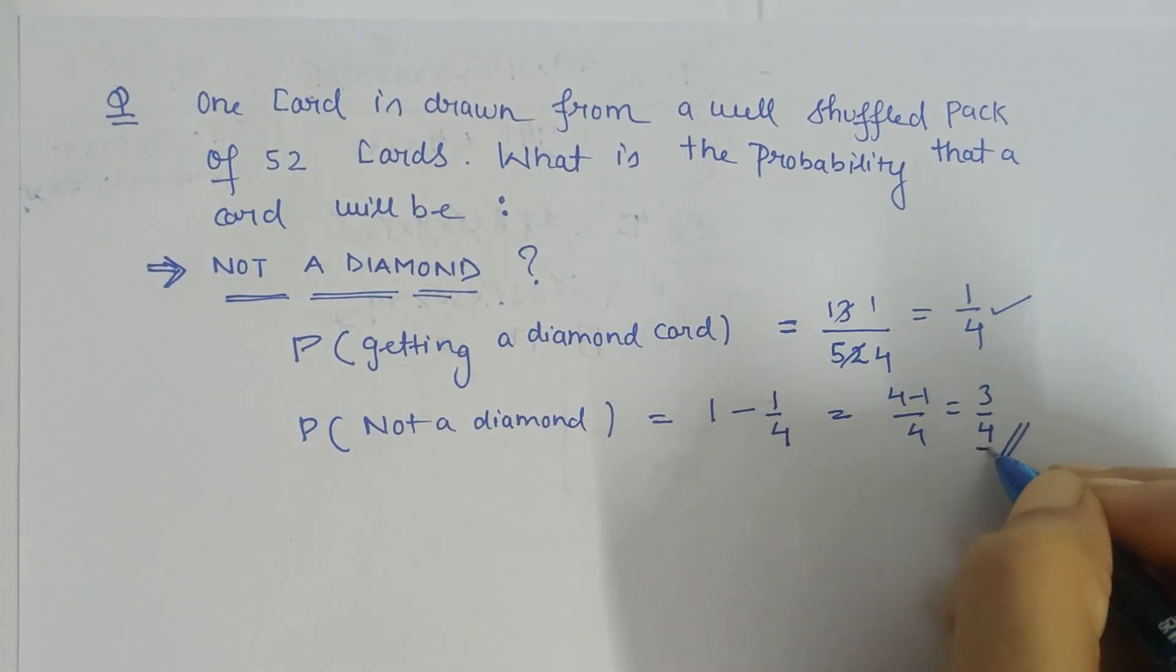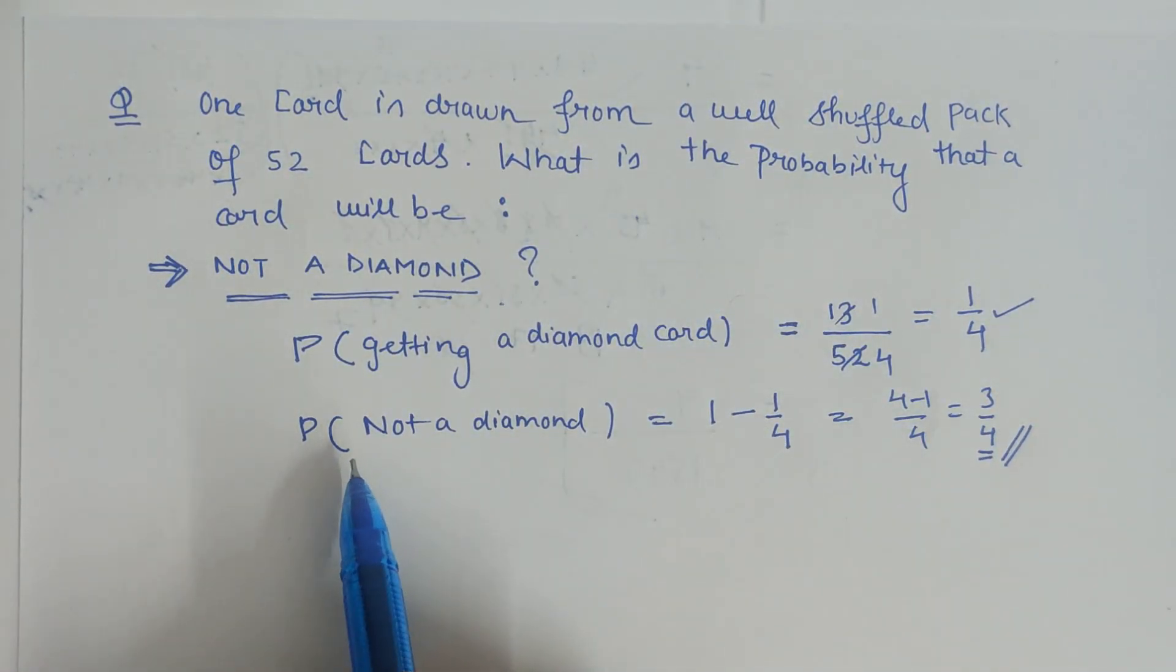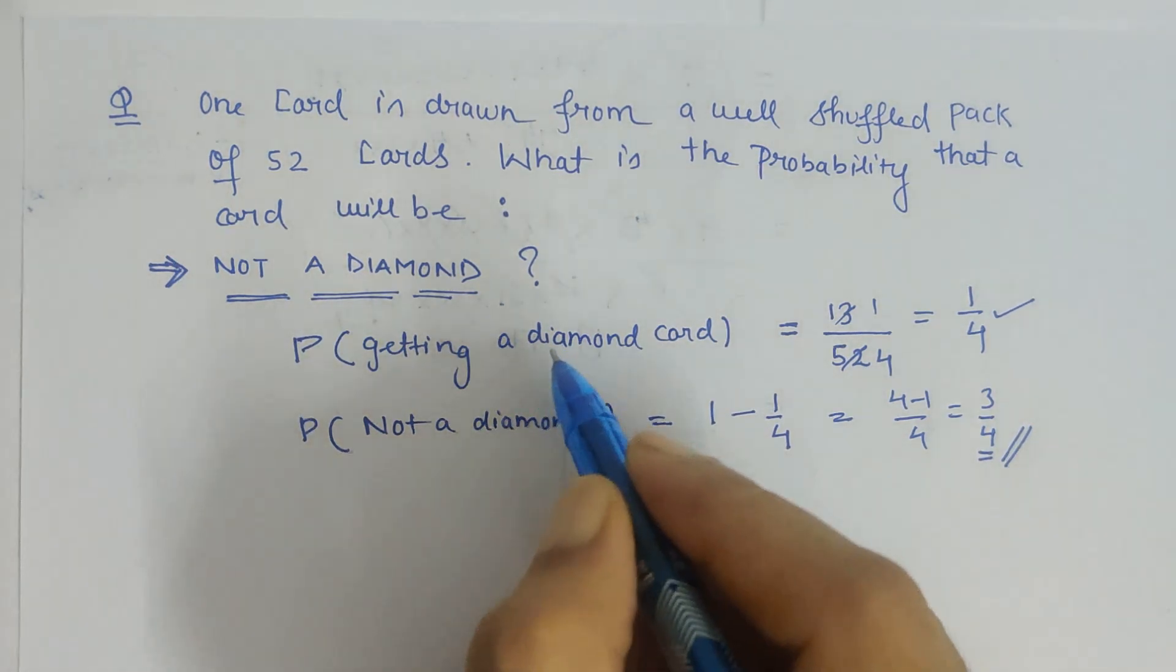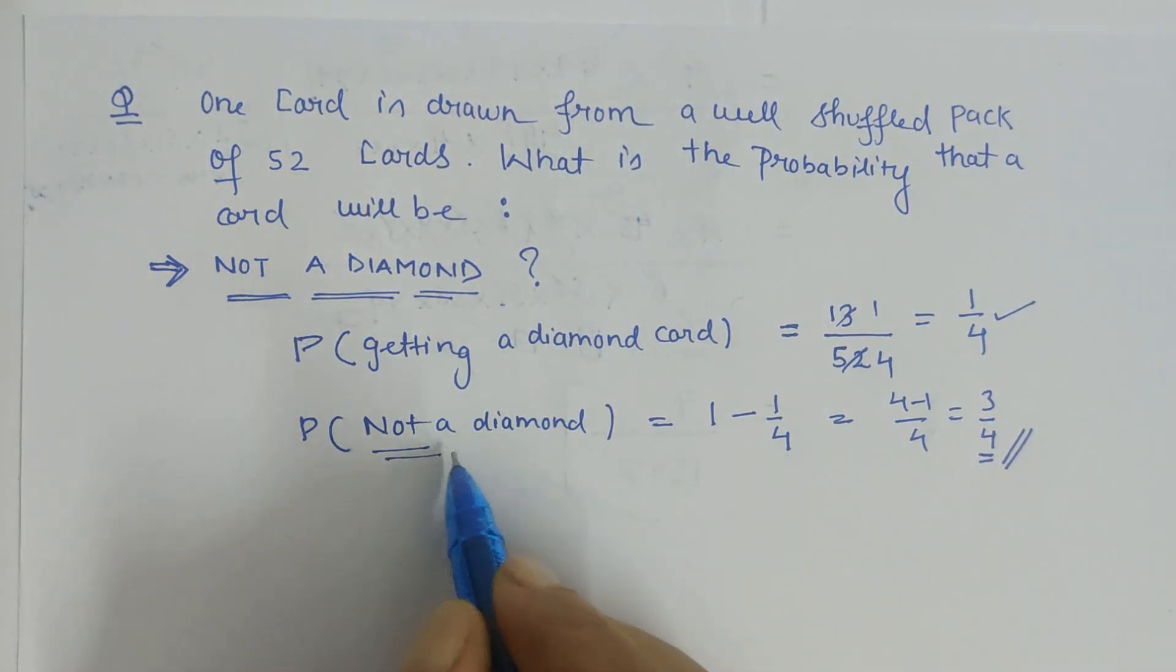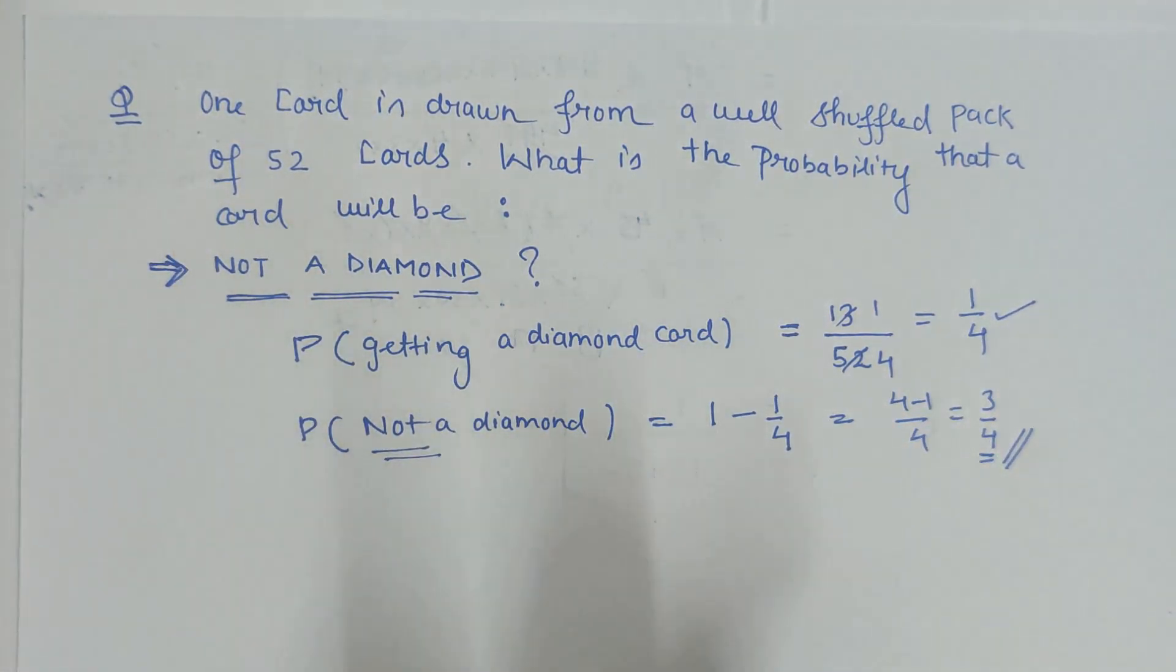This is how we calculate whenever we have such a negation type of situation - not a diamond from the complete set. Thank you and have a nice day.